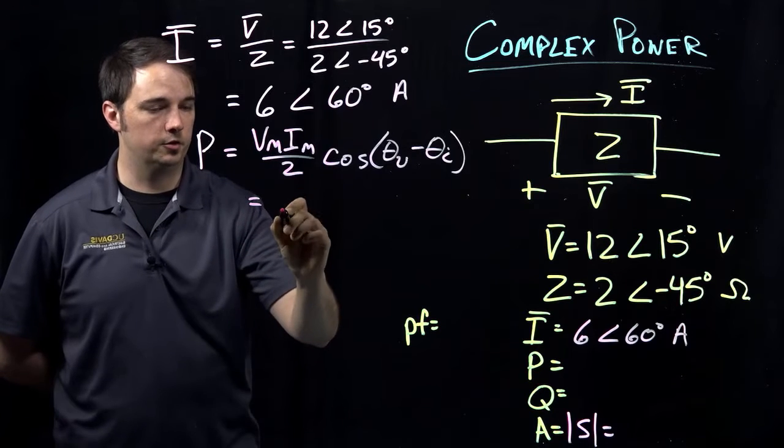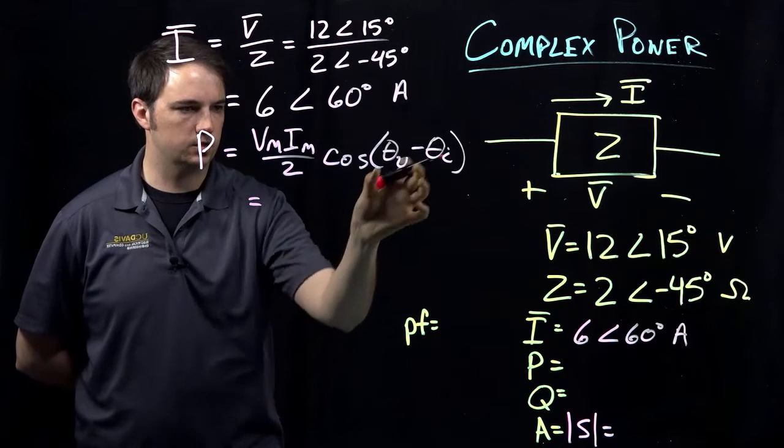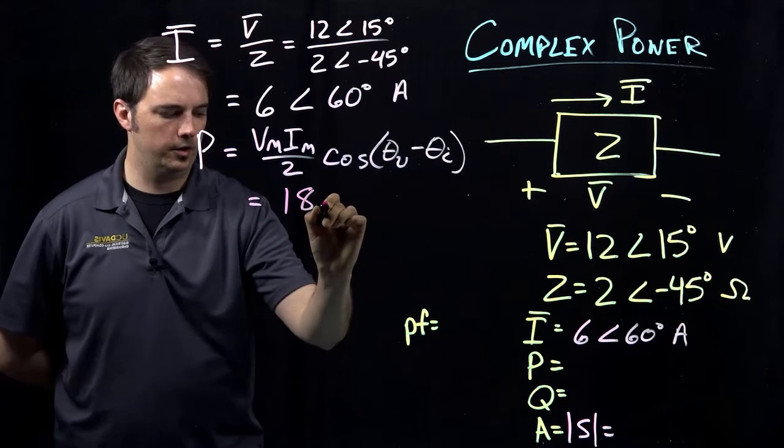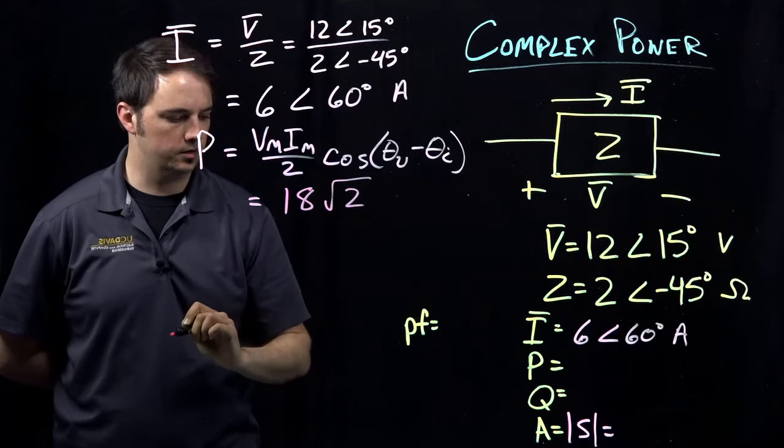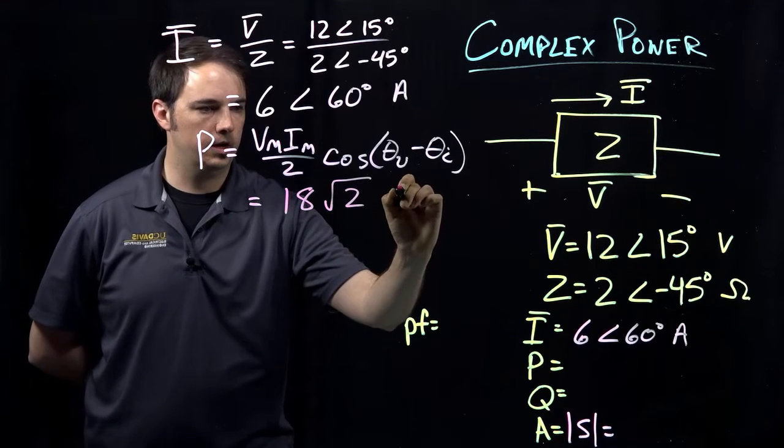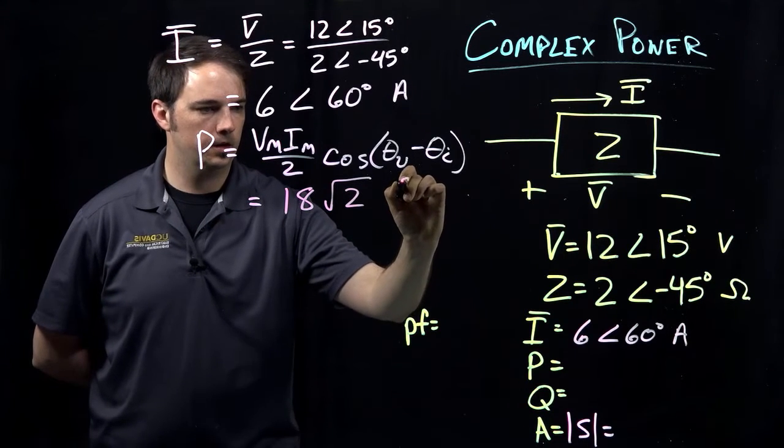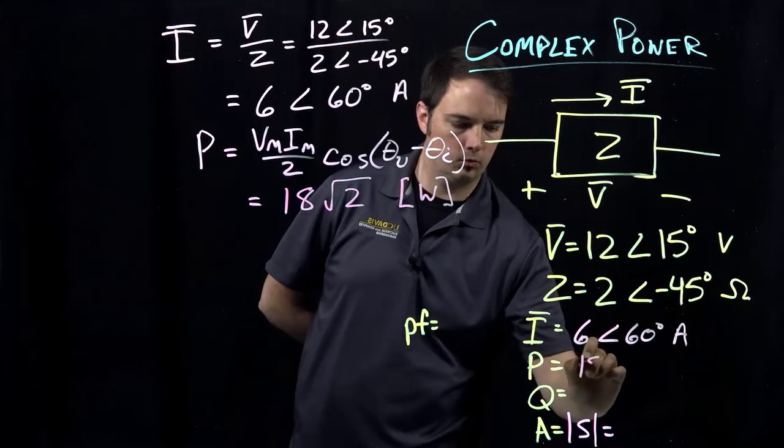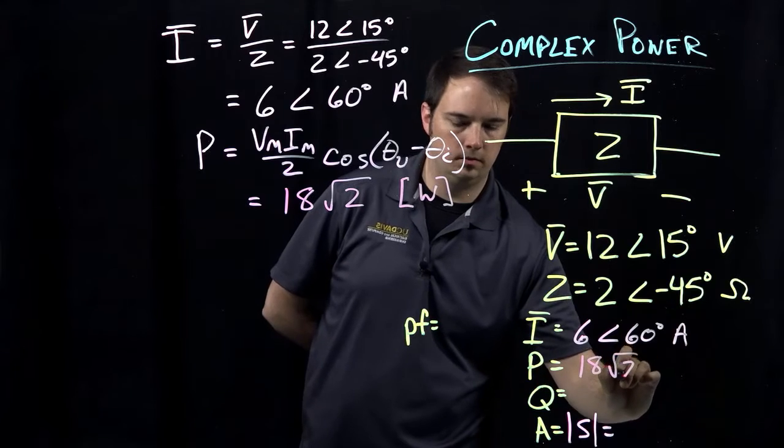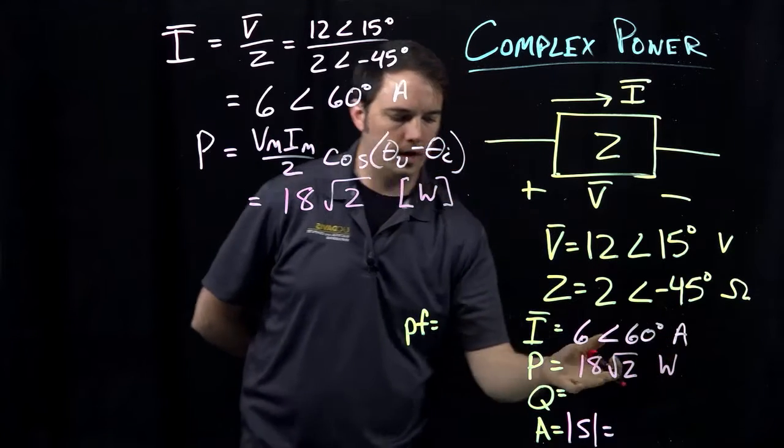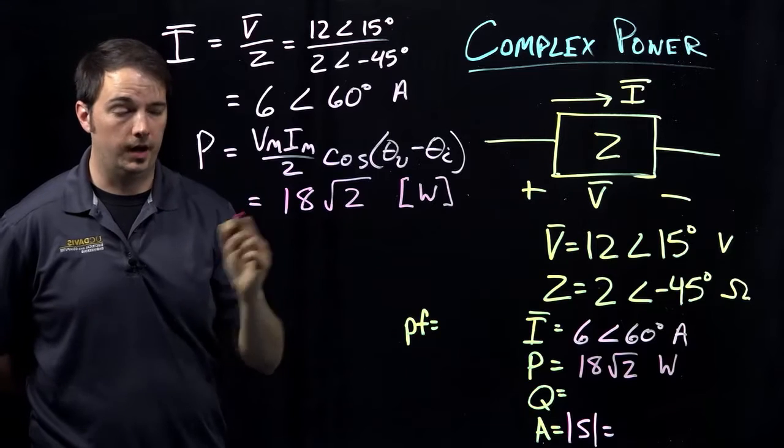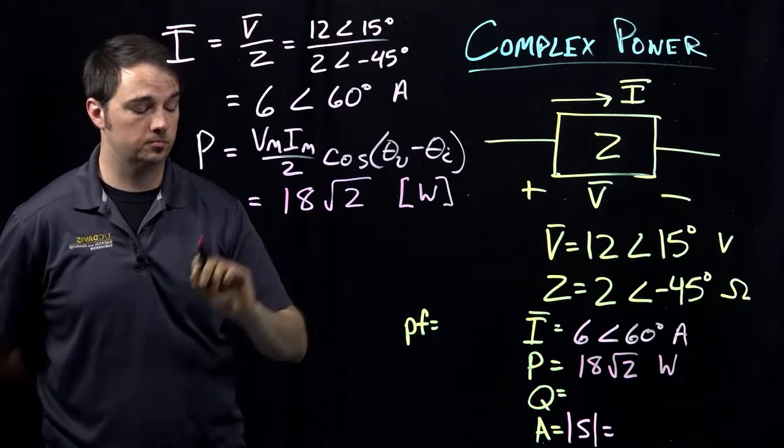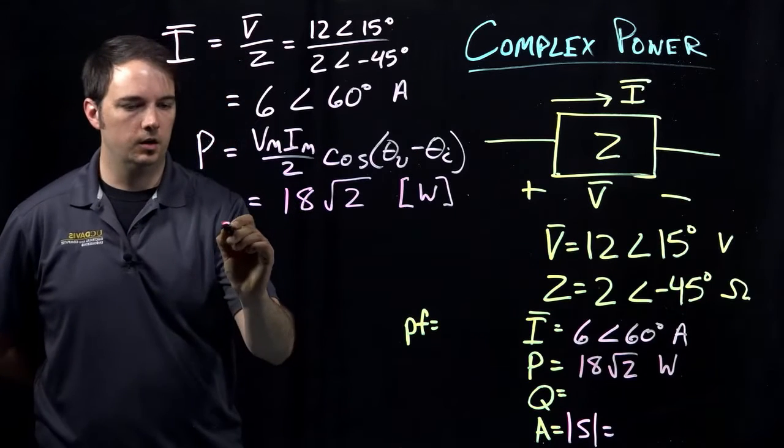Substituting in, having to do the cosine of, in this case, negative 45 degrees, works out to give me a value of just leaving it in the root form, 18 times root 2. This would be in units of watts. Remember, average or real power is still given in units of watts. And here, the reason I'm keeping the root 2 in here is because this is actually a problem I've got on an exam where I don't allow calculators, so it's perfectly acceptable to leave it in that form.